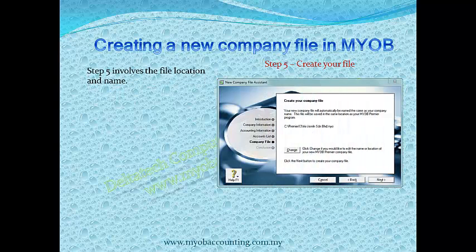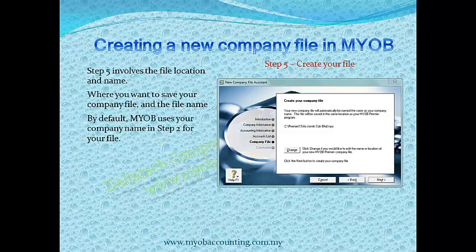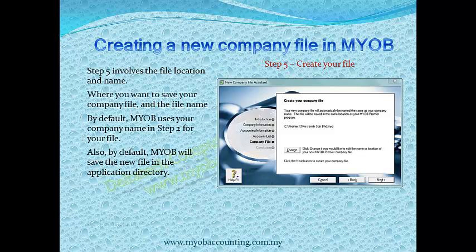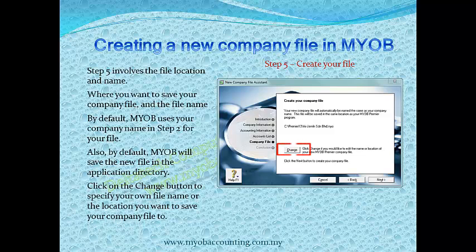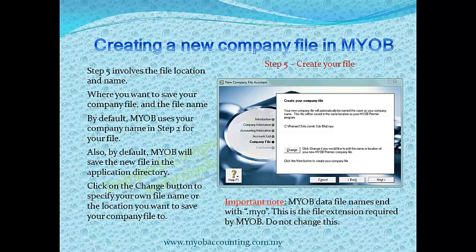Step 5 involves the file location and name — where do you want to save your company file and what is the file name? By default, MYOB uses the full company name from Step 2 for your file. You can change this if you prefer. Also by default, MYOB will save the new file in the application directory, for example, Drive C Accounting 19 or Drive C Premier 13. Click the Change button to specify your own file name or the location you want to save your company file to. MYOB data file names end with .myo — this is the file extension required by MYOB and it should not be changed.